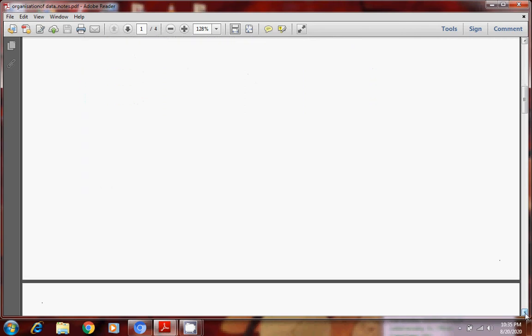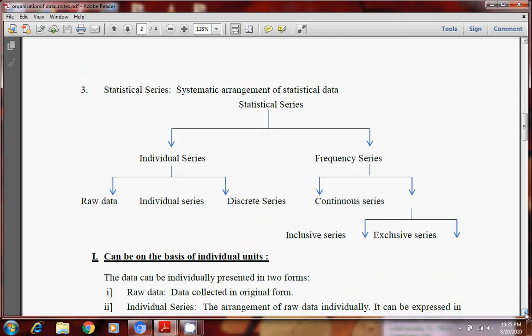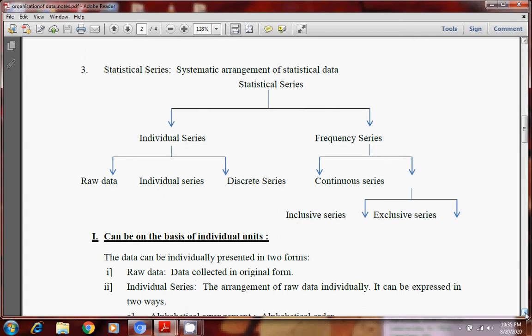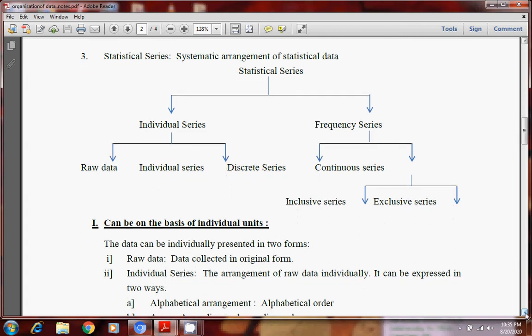Means we can put data together according to their traits, according to the qualities of the data. Now statistical series, individual series, these are the series inside this chapter. Individual series, frequency series. Individual series, raw data. Individual series, discrete series, continuous series. And this continuous is further in inclusive and exclusive series.